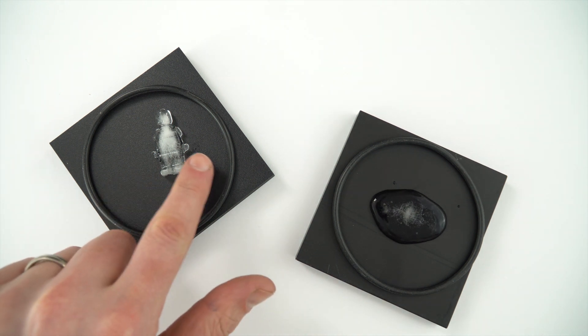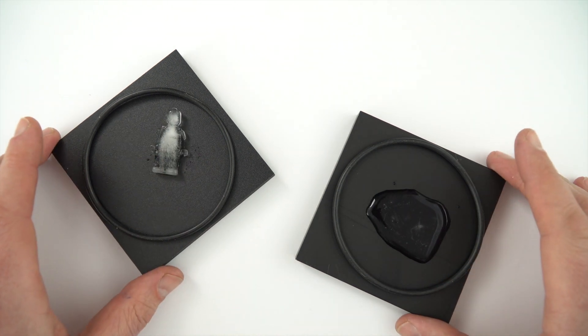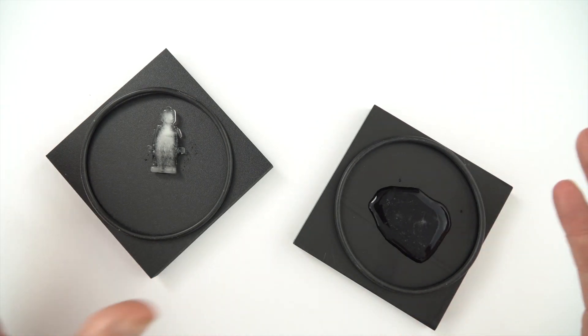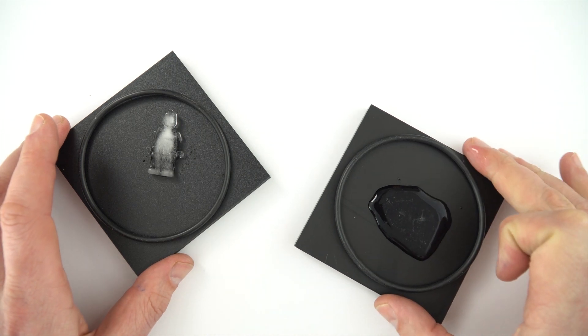So this guy is still pretty okay, whereas this one's just a load of mush. Now both of these things, they look pretty identical, but actually they're made out of different materials. This one is made out of a plastic, and this is made out of metal.